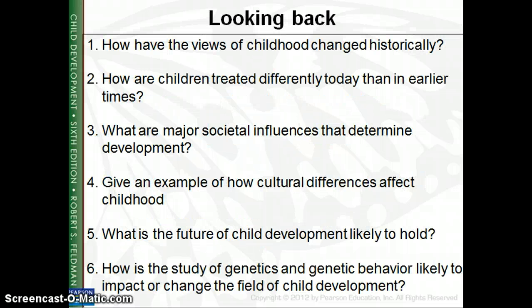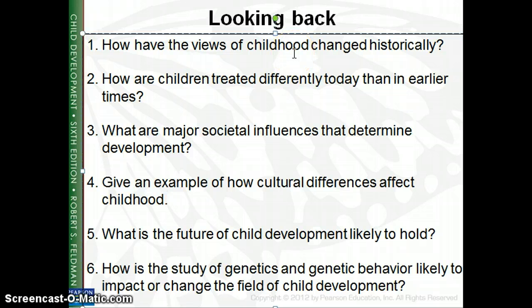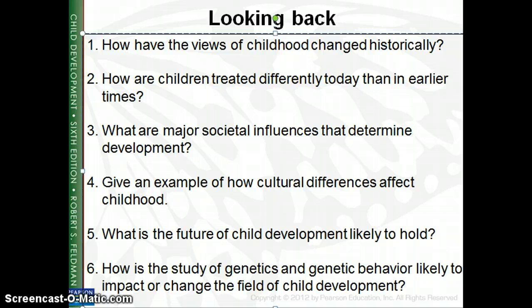At the end of each chapter there are looking-back questions — things to think about as you do your reading. These cover topics such as how views of childhood have changed over time. Early on, children were thought of as little miniature, imperfect adults and weren't looked at the way we look at them now, where we recognize they're still learning and developing with less-developed brains. Other review topics include cultural differences, societal differences, what child development will look like in the future, and how genetics and genetic behavior unfold.